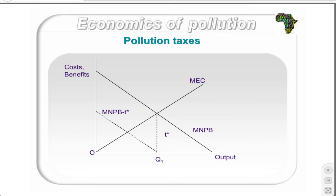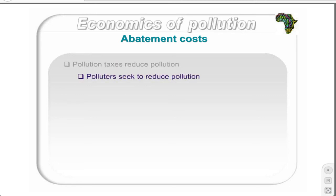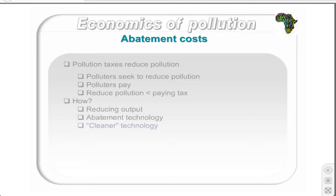Difficulties arise in reality in determining T-star, as governments often lack adequate information regarding MEC and MNPB due to information asymmetry. Thus, government intervention is often subjective. Pollution taxes result in the reduction of pollution levels, as polluters now seek to reduce pollution since they have to pay a tax per unit emitted. They will reduce pollution so long as it is cheaper to reduce it than to pay the tax. Polluters can reduce pollution by reducing output, or by introducing pollution abatement technologies or cleaner technologies to produce the outputs. These technologies have cost implications described in the following slide.